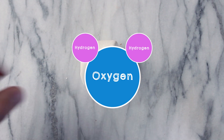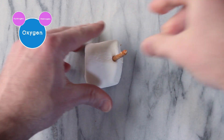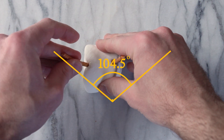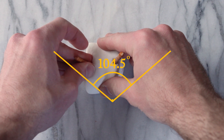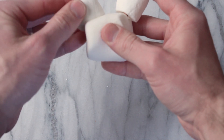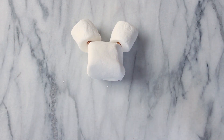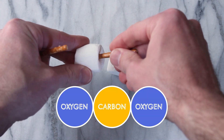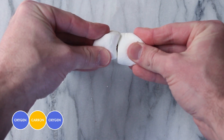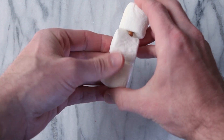To model a water molecule, take a jumbo mallow and stick in two pretzels at an angle — 104.5 degrees to be exact, but who's counting? Then just stick on the two smaller mallows. For a carbon dioxide molecule, take three regular mallows and put them in a line held by pretzels.